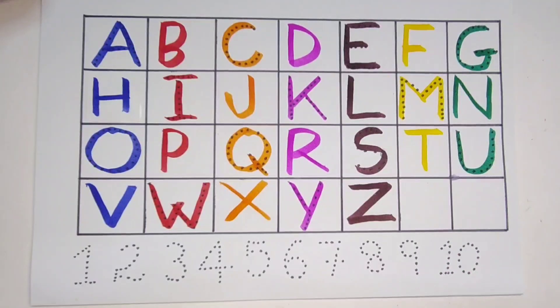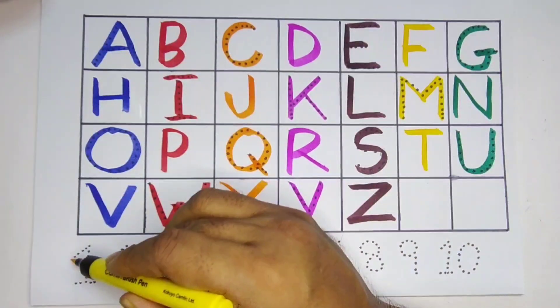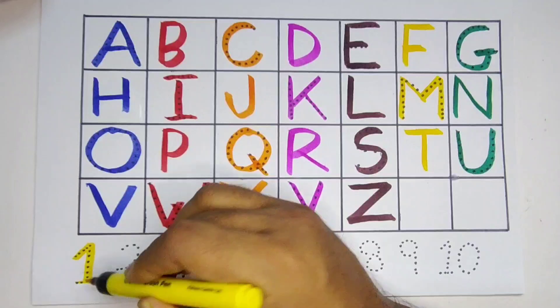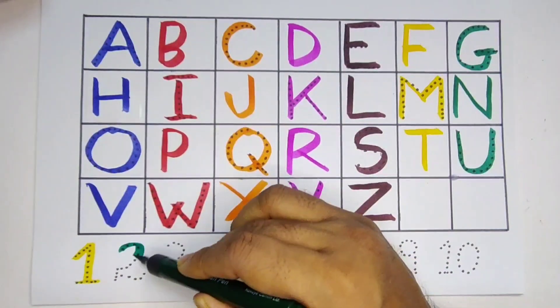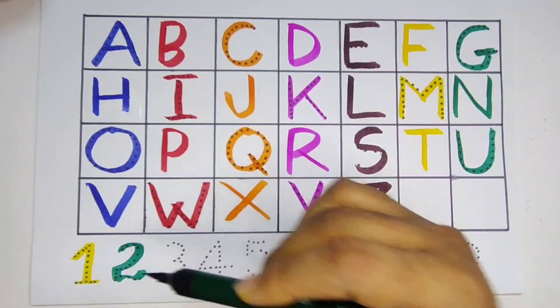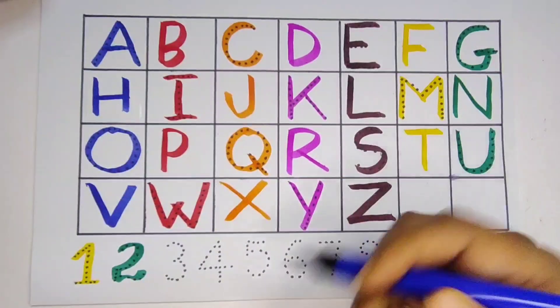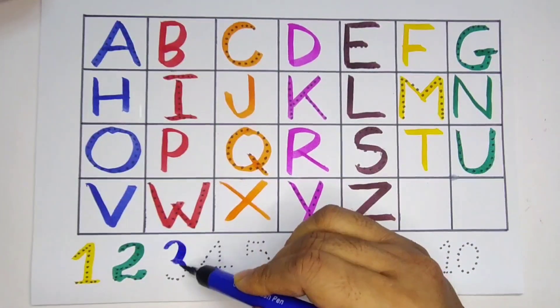Now let's learn the numbers. 1, yellow color. 2, green color. 3, blue color.